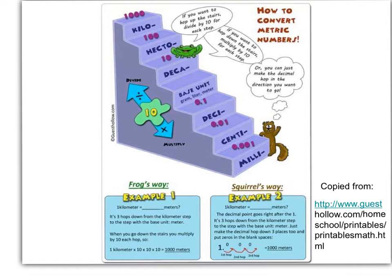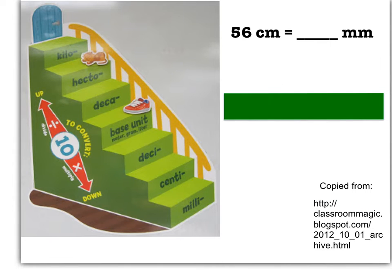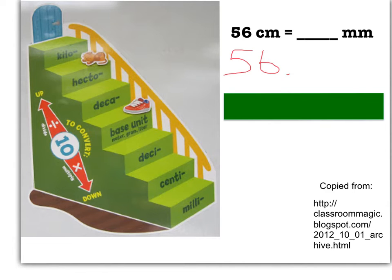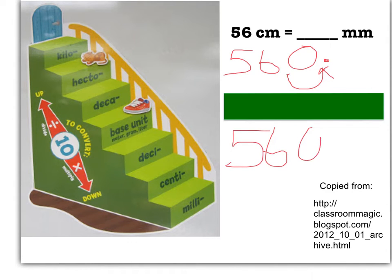Let's do a problem together. Here we have 56 centimeters and we want millimeters. Go to your staircase, find centimeter, then millimeter. We're going to jump down one step, and when we go down it's like moving to the right. So we move our decimal point one place to the right. Remember, when there's no decimal point, we assume it's right after the number. So 56 becomes 560 millimeters.